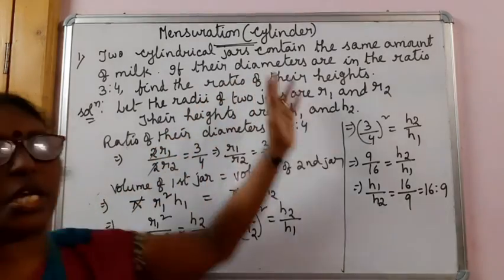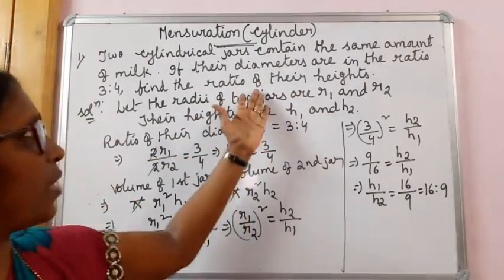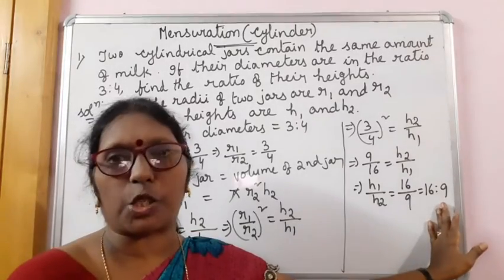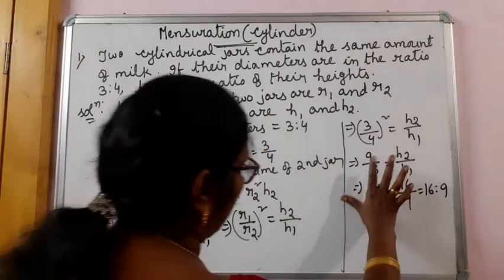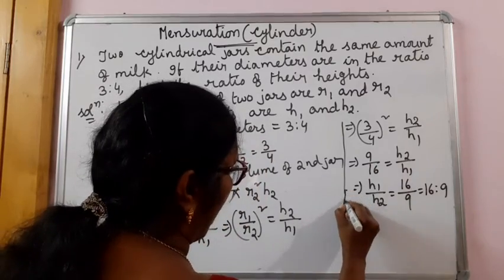But whenever the question is asked to have the ratio, always the answer should be in ratio form. Find the ratio of their heights. Therefore, the ratio of their heights is,